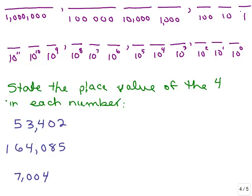Let's do one more thing. Here are the place values: ones, tens, hundreds, thousands, ten-thousands, also shown in exponential form. The question is: how would we state the place value of the 4 in each of these numbers? In other words, depending on its placement, what does the 4 really stand for? Try this on your own first.